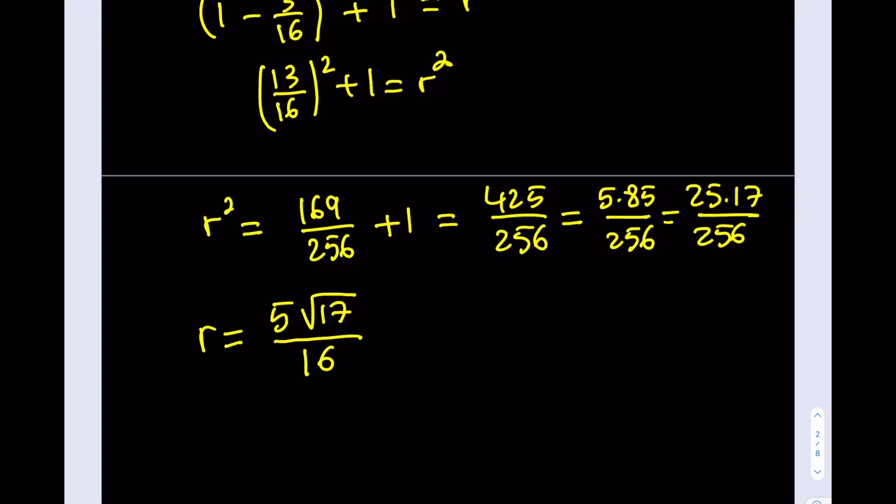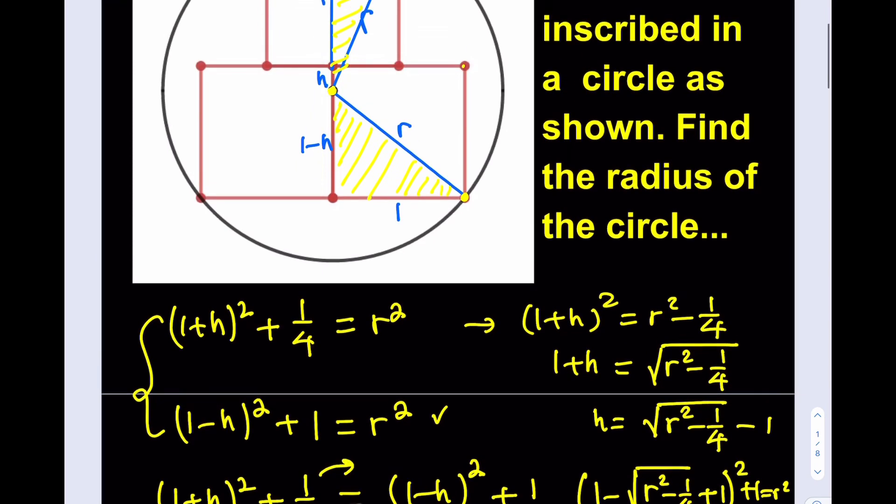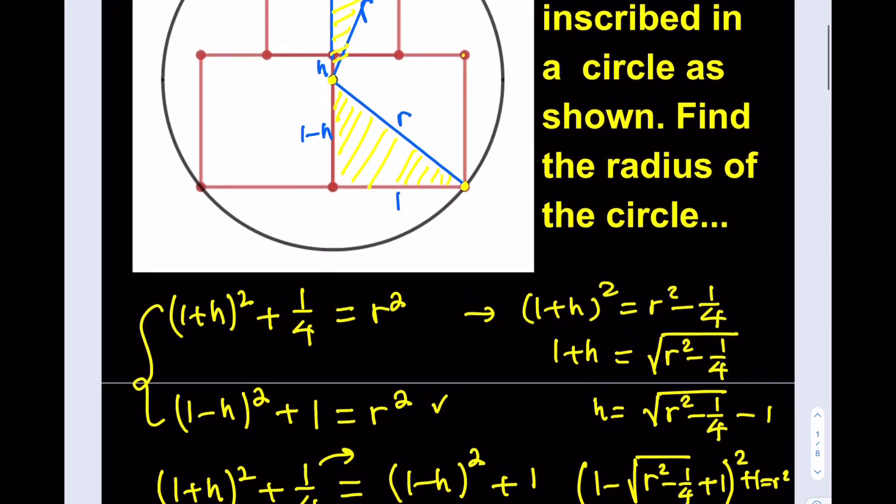Okay, and this makes sense because this number is pretty close to fourth, if you estimated the square root of 17 as 4-ish, and then that would be 20 over 16, which simplifies as 5 fourths. So this number is pretty close to 5 fourths, and you can tell from here that actually the radius is going to be slightly larger than 1 because it's the hypotenuse of a triangle whose leg is 1. So that makes sense.